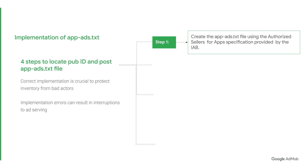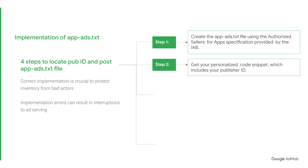To ensure proper implementation, simply follow these steps. Firstly, create the Apex.txt file using the Authorized Sellers for Apps specification provided by the IAB. Next, get your personalized code snippet, which includes your publisher ID.